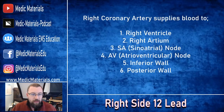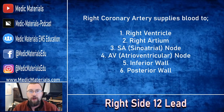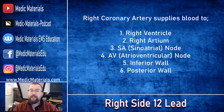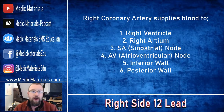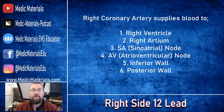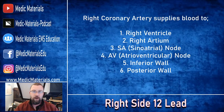The right coronary artery is the blood supply to a lot of things. It supplies blood flow to the right ventricle, the right atrium, the SA node (the sinoatrial node — the pacemaker of the heart), the AV node (the atrioventricular node — the secondary pacemaker of the heart), and the inferior wall and the posterior wall.